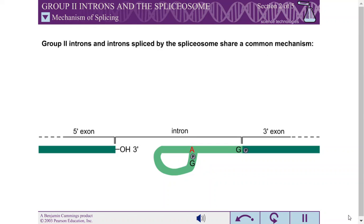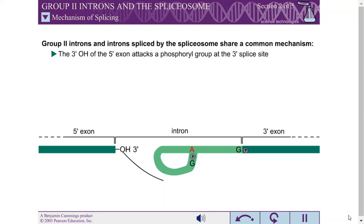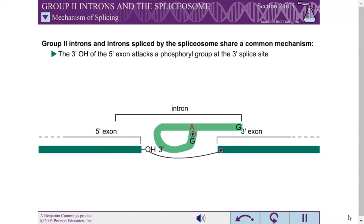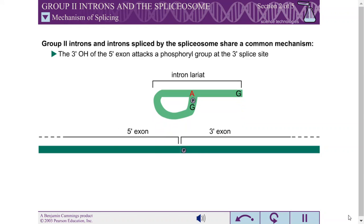In the second reaction, the newly liberated 3' hydroxyl of the 5' exon acts as a nucleophile and attacks the phosphoro group at the 3' splice site. This transesterification reaction joins the 5' and 3' exons and liberates the intron. The liberated intron is in the shape of a lariat.